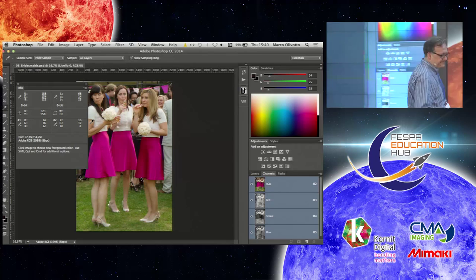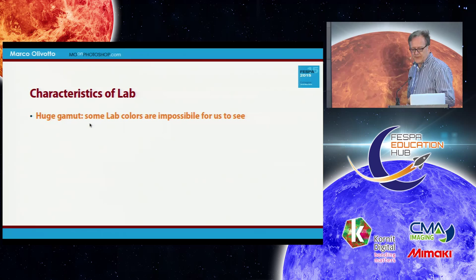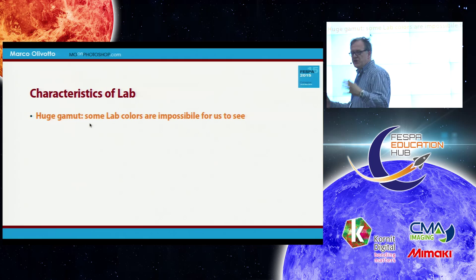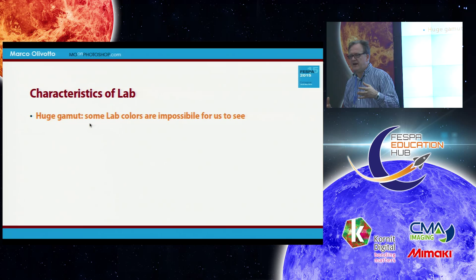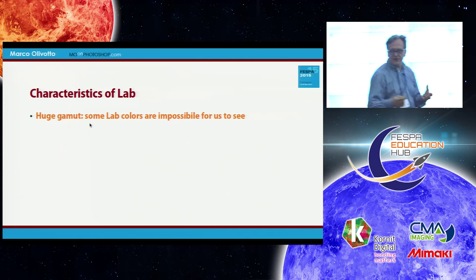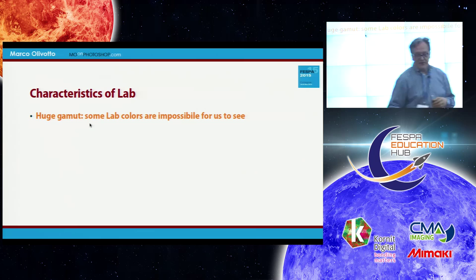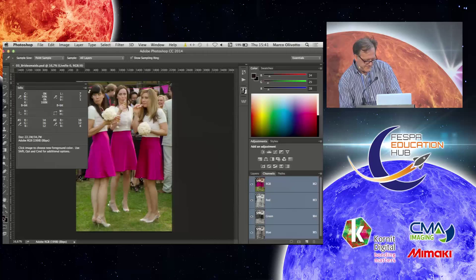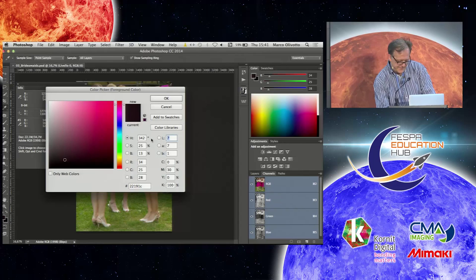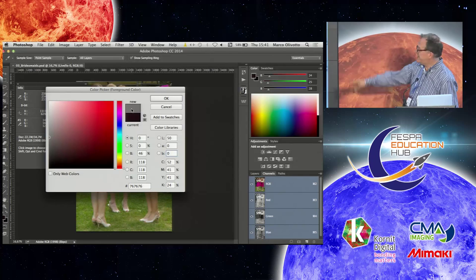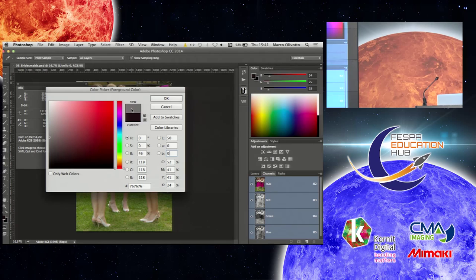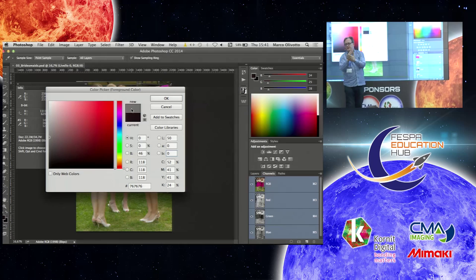Some characters of LAB: we have a huge gamut. Some colors of LAB are impossible for us to see. Why? Because they are too bright, too saturated — we have limits in our visual system. If you take LAB literally, there are some very weird colors. For example, 50-0-0 means halfway luminosity, so it's a gray — 0-0 means absolutely neutral, an achromatic color. If I change 50 to 0, light is off, and it's neutral — that's black.